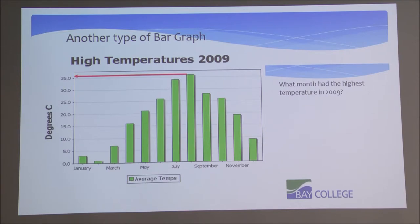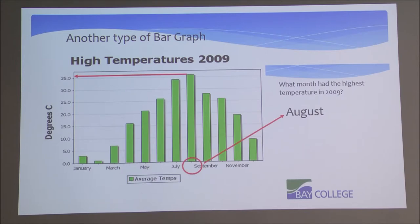The question asks what month had the highest temperature — and it's not July. It's the month between July and September, which isn't listed on the graph. Using our prior knowledge, we know that would be August. So August had the highest temperature in 2009 according to our bar graph. To review: bar graphs give us quantities versus categories or groups. We'll see a similar type of graph later called a histogram, and we'll explain the difference when we get to it.